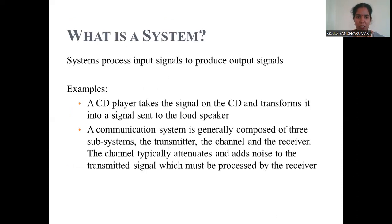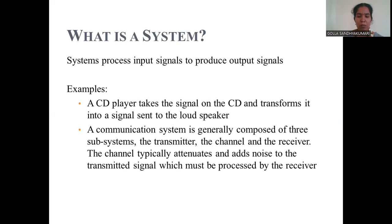A system processes input signals to produce output signals. A system may be a device or an algorithm — hardware or software — that processes signals to produce a desired output. For example, a CD player takes signals on a CD and transforms them into a signal sent to the loudspeaker. A basic communication system requires a transmitter, a receiver, and a channel, where the channel attenuates and adds noise to the transmitted signal, which is then processed by the receiver.